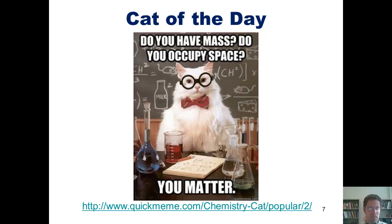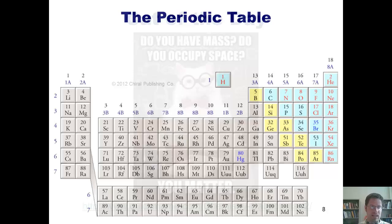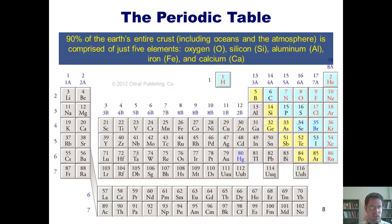All right. So my simple definition of an element was, the things found on the periodic table. But what is the periodic table, you ask? Well, the periodic table is this. It's an organized table showing every chemical element known to humankind. By way of interest, did you know that 90% of the Earth's crust, including oceans and the atmosphere, is comprised of just five elements? These five are oxygen, silicon, aluminum, iron, and calcium.